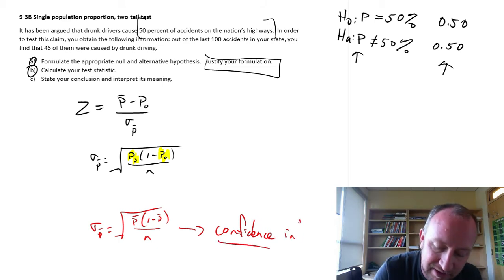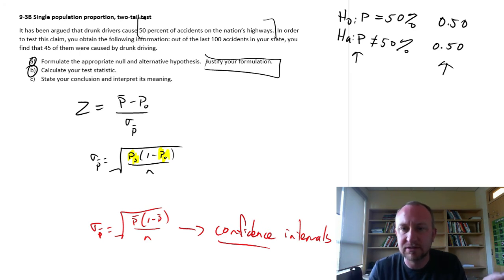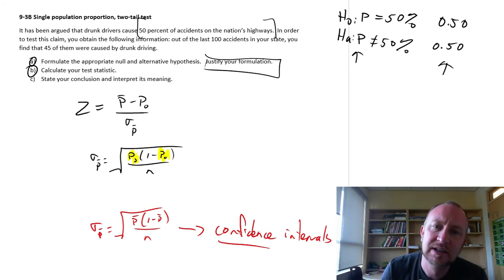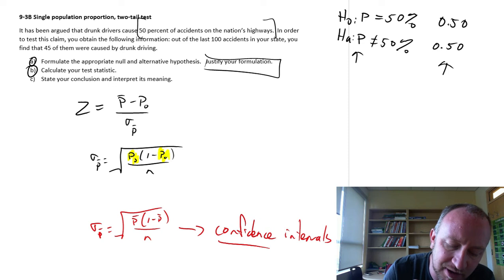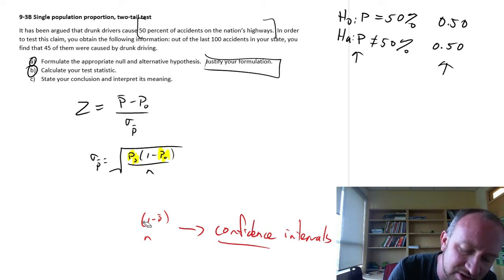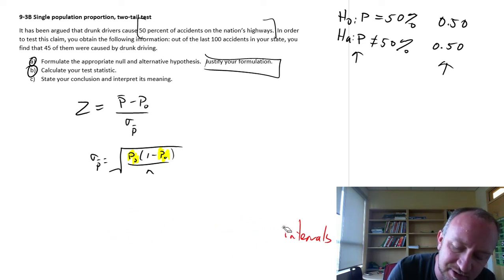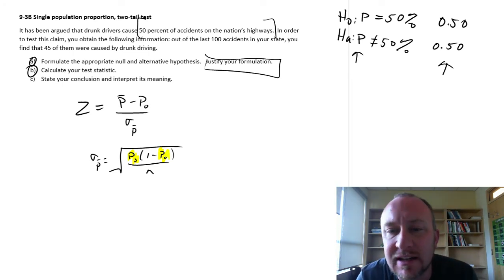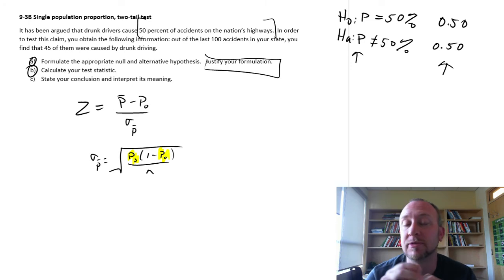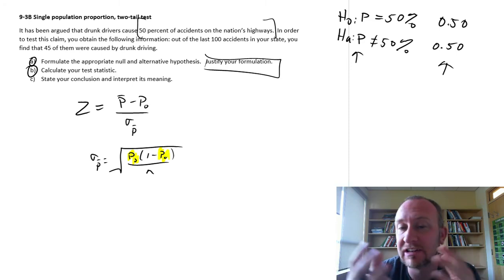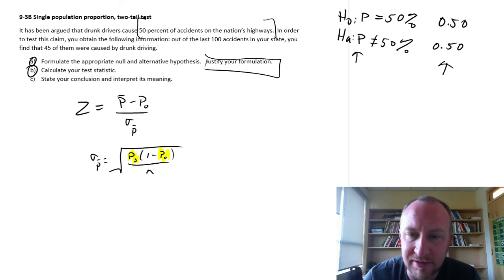So when we're doing a test, don't use that p-bar. We don't need it. We're using the hypothesized value, because we of course always do these tests under the assumption that the hypothesis is true, unless we have evidence to show otherwise. When we're doing confidence intervals, of course, there is no hypothesis. There is no test. So we are only working with sample data. Okay, enough said.